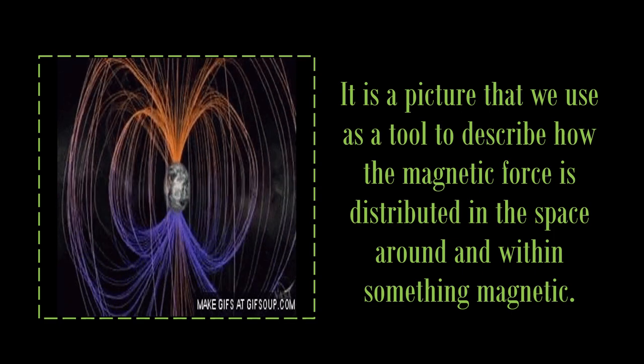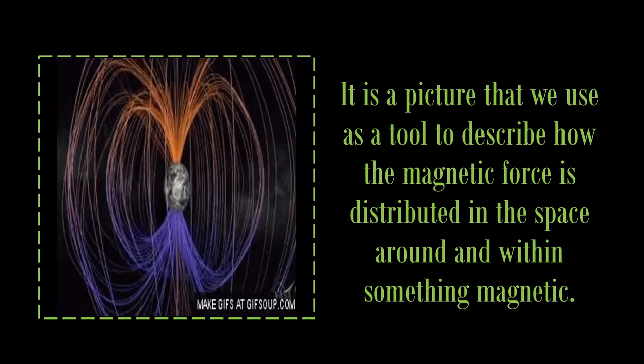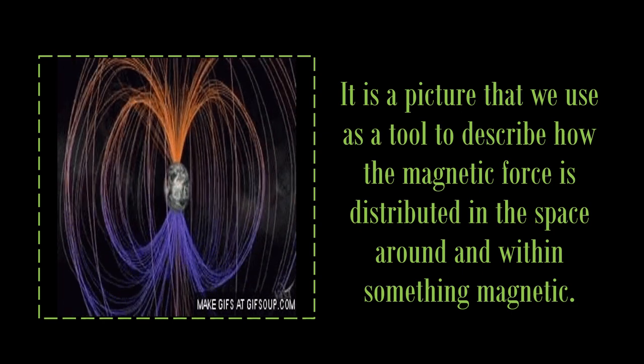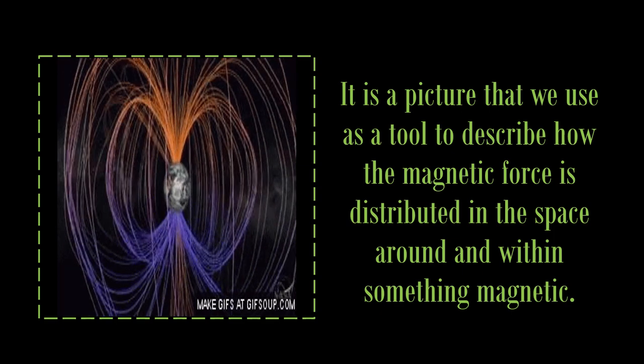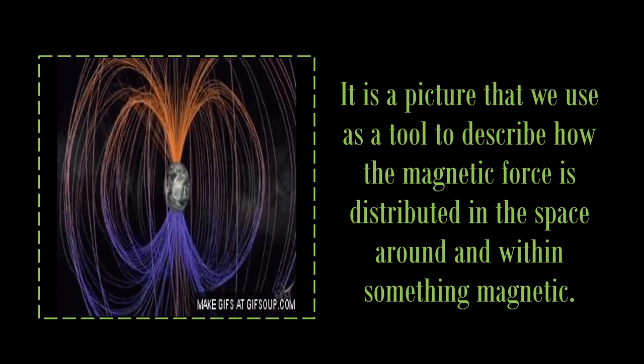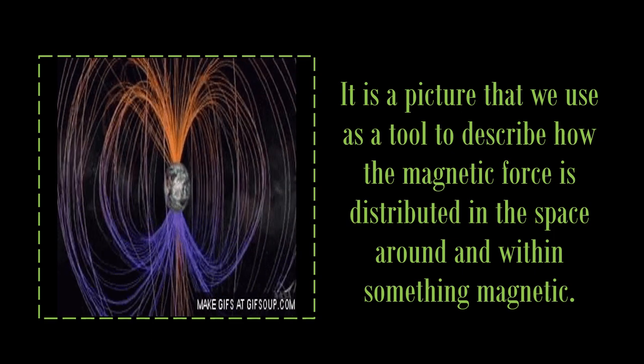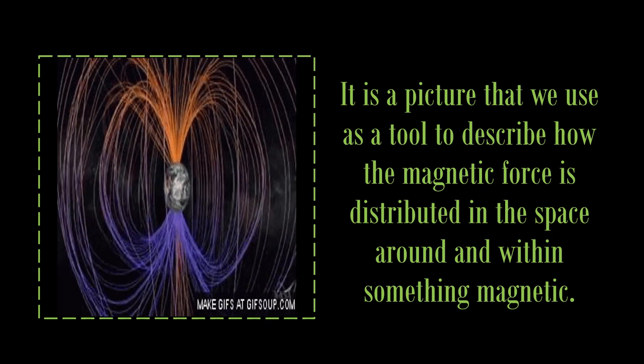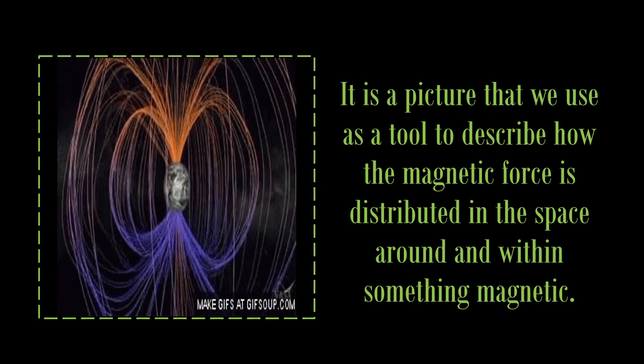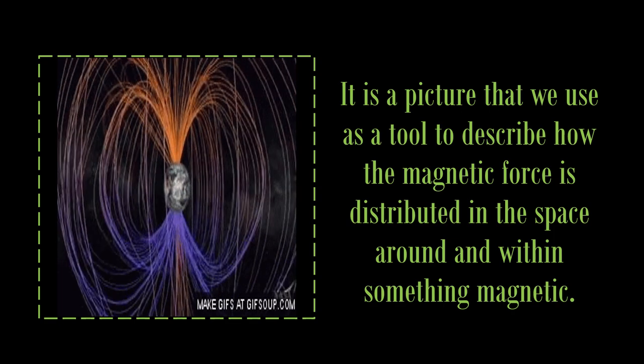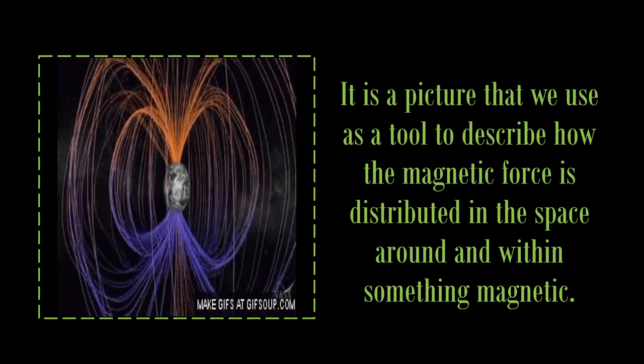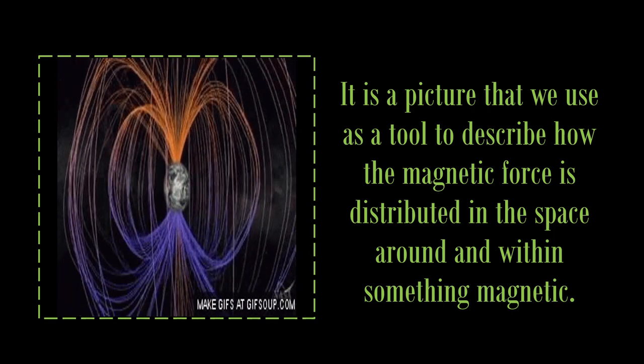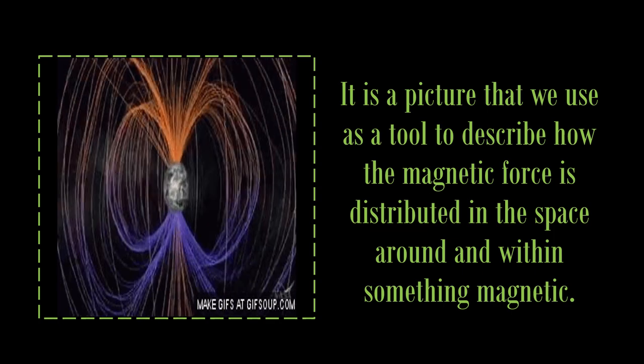Magnetic field is a picture that we use as a tool to describe how the magnetic force is distributed in the space around and within something magnetic. The Earth's magnetic field is believed to be generated by electric currents in the conductive iron alloys of its core, created by convection currents due to heat escaping from the core. However, the process is complex and computer models that reproduce some of its features have only been developed in the last few decades.